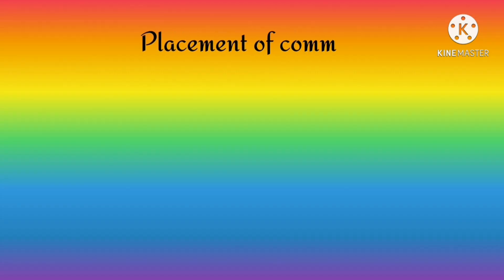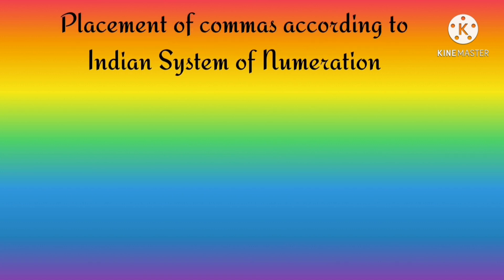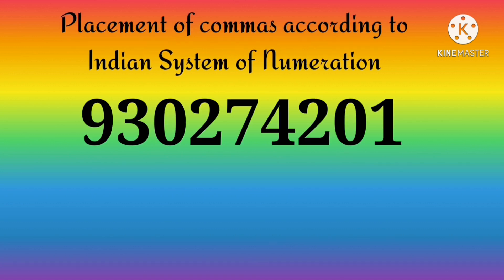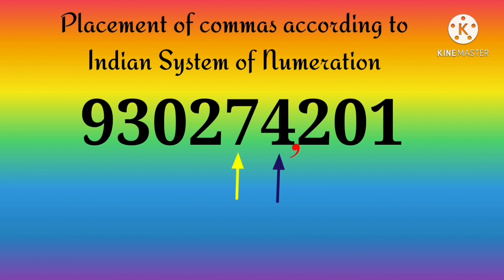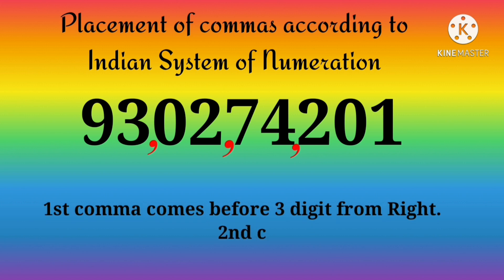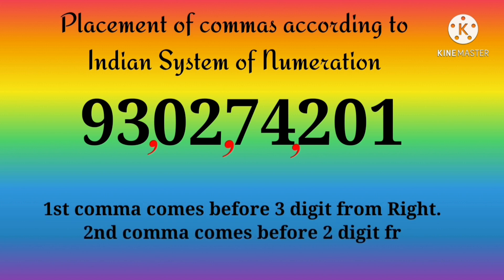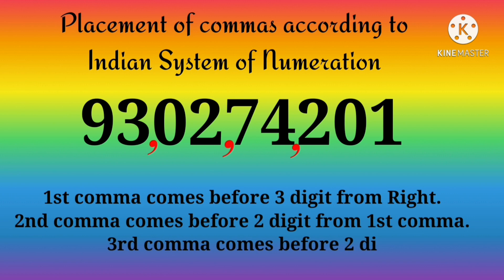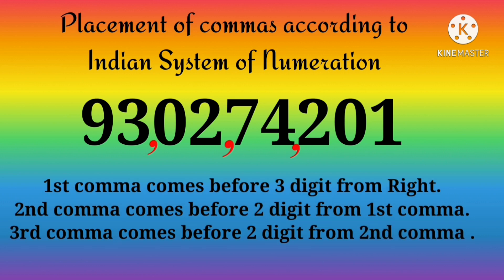Now we will learn to place commas according to the Indian system of numeration. Count one, two, three from the right and put a comma. Again count one, two and put a comma. Again count one and two, then put a comma. So the first comma comes before three digits from the right, and the second comma comes before two digits from the first comma.